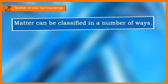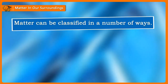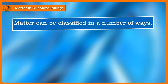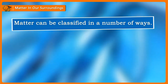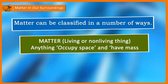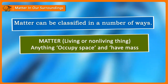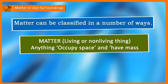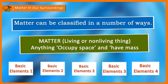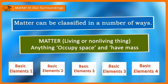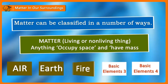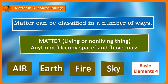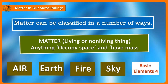Matter can be classified in a number of ways. Ancient Indian philosophers said that all the matter, living or non-living, was made up of five basic elements: air, earth, fire, sky and water.